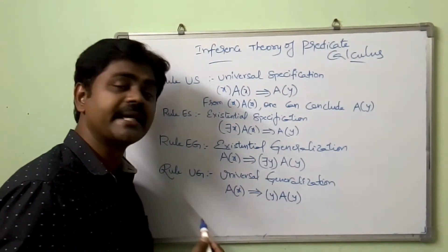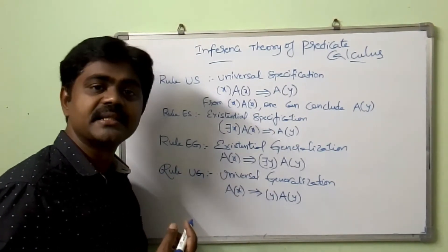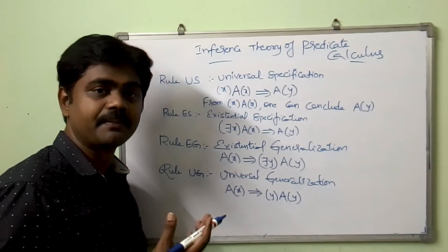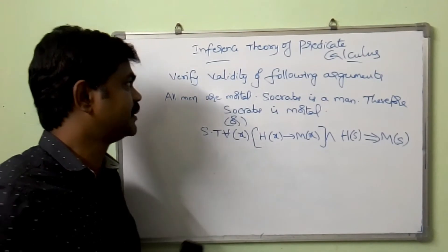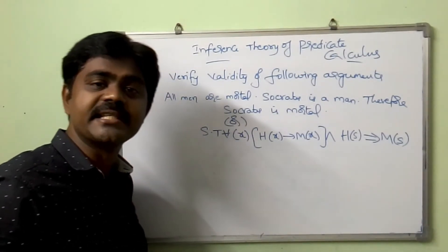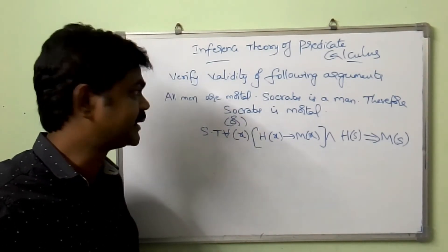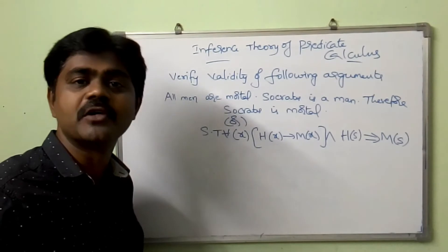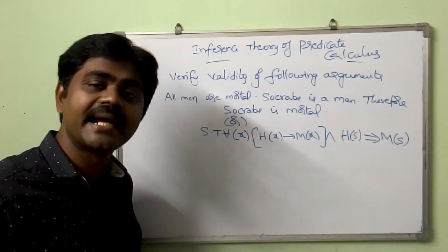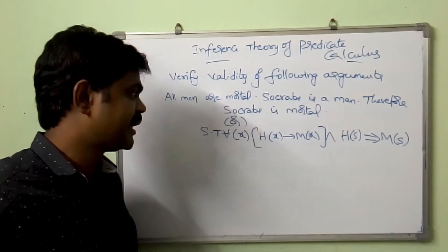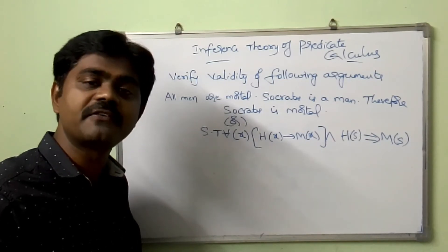So in order to understand this, we need to explain an example so that you will get a clear idea. The example is: verify the validity of the following argument — All men are mortal. Socrates is a man. Therefore, Socrates is mortal. Or they will directly ask: show that for all x, H(x) implies M(x), and H(S), we should conclude M(S).